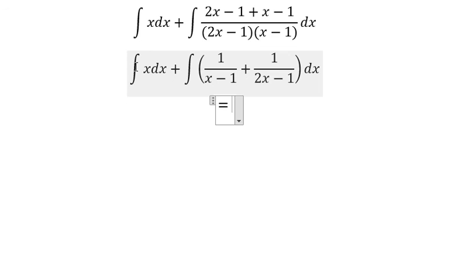Now we can get the final result. The integral of x is x² over 2. The integral of 1 over (x minus 1) is the natural logarithm of the absolute value of x minus 1.